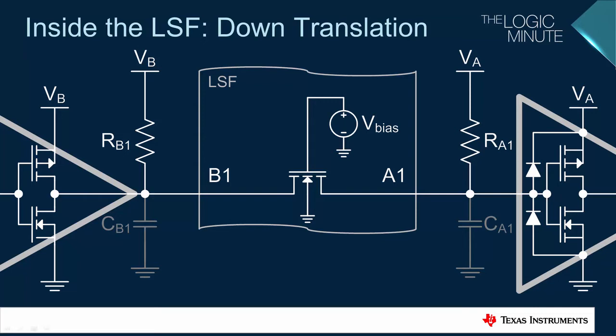We're going to break down the translation into two components, when the transmitter is driving the input low and when the transmitter is driving the input high. When the transmitter is driving the input low, the channel 1 FET of the LSF is turned all the way on and is essentially acting like a resistor. The input at the receiver is driven low as well through the FET.